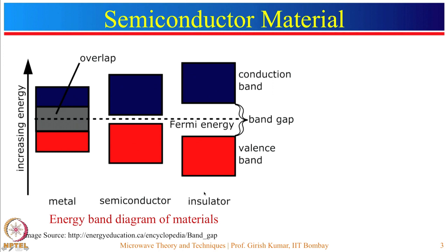The next type of material is the insulator. In the case of insulators, the band gap between the conduction band and the valence band is relatively high — of the order of 4 to 9 electron volts. So electrons cannot move easily from the valence band to the conduction band; it requires a sufficient amount of energy. Therefore, they are not a conducting material.